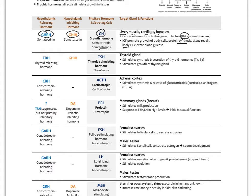Somatomedins also induce lipolysis and elevate blood glucose. In younger life, adequate growth hormone allows for growth and has a slimming effect. There's interest in adults using growth hormone for that role, but we now know that's a bad idea because it raises blood sugar and can cause diabetes and high blood pressure in excess. Growth hormone is secreted most at night during slow-wave sleep. Exercise, fasting, and good sleep are the three primary things that can help increase growth hormone.